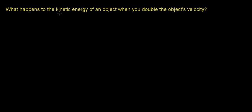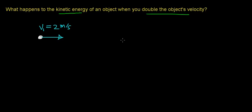In this video, we're going to try to figure out what happens to the kinetic energy of an object when you double the object's velocity. So if you imagine this is the object that we're considering, and it's traveling in this direction with a velocity V1, which we'll say is 2 meters per second. We want to figure out what happens to the kinetic energy of this object when we double this object's velocity.